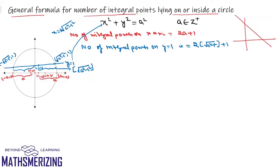What about the line y = -1? Symmetry in the problem clearly shows that the number of points on y = 1 equals the number of points on y = -1. So the number of integral points on y = -1 is also 2·⌊√(a² - 1²)⌋ + 1.